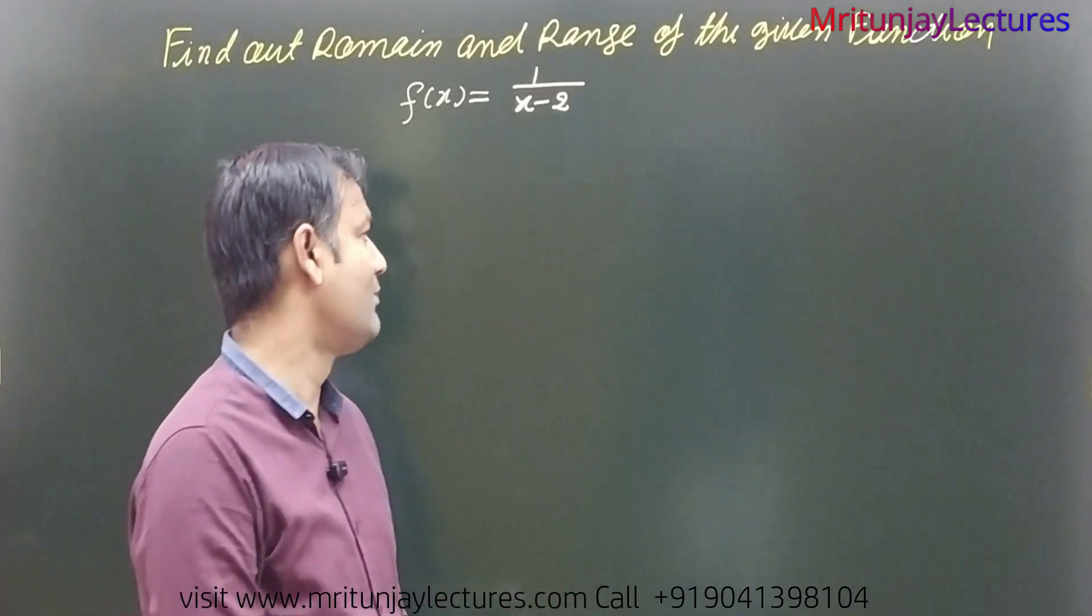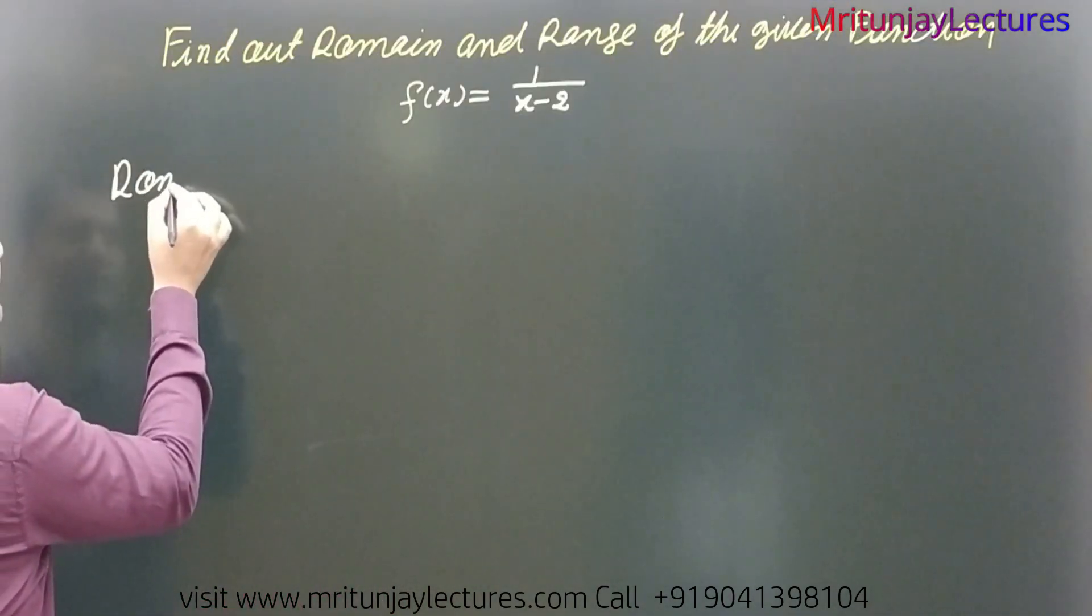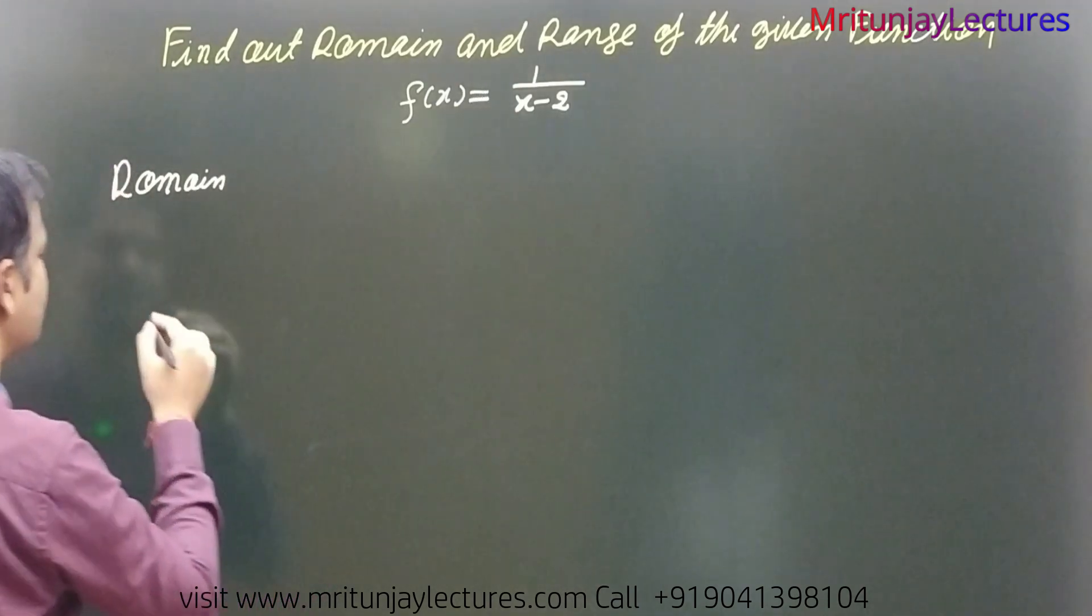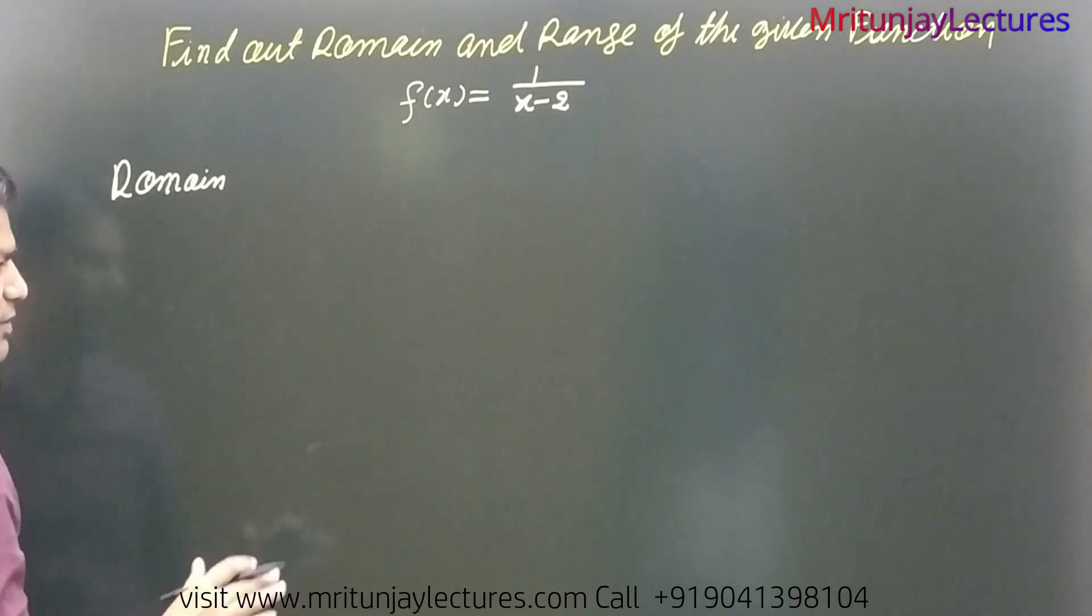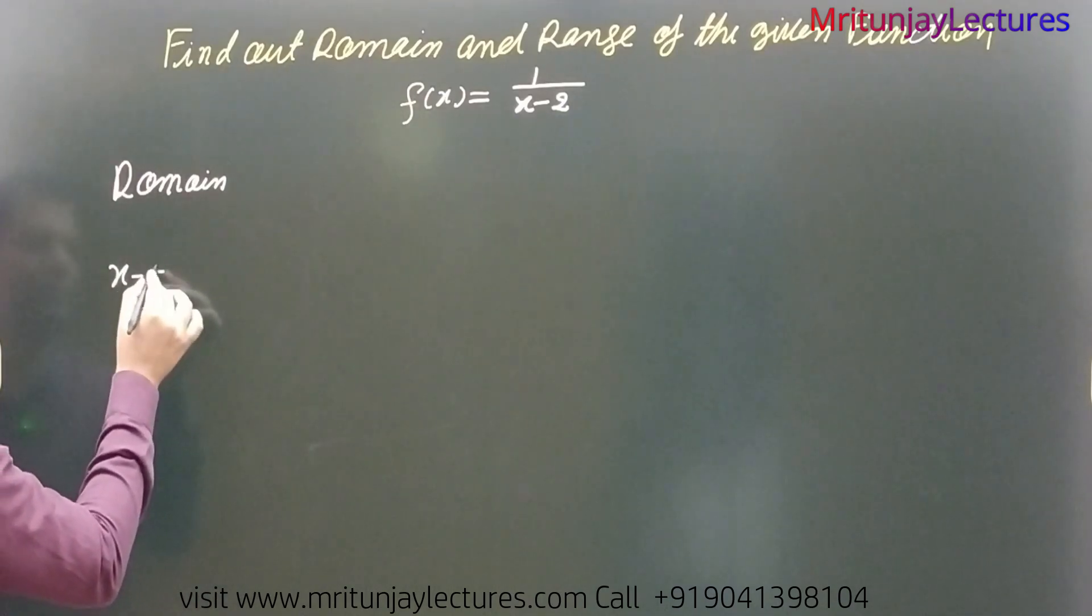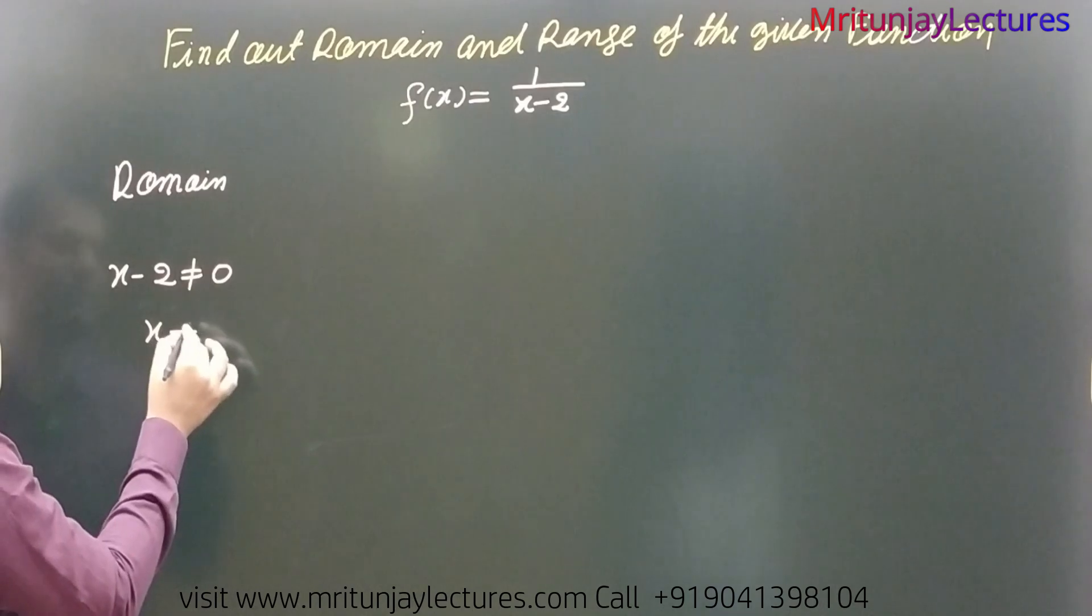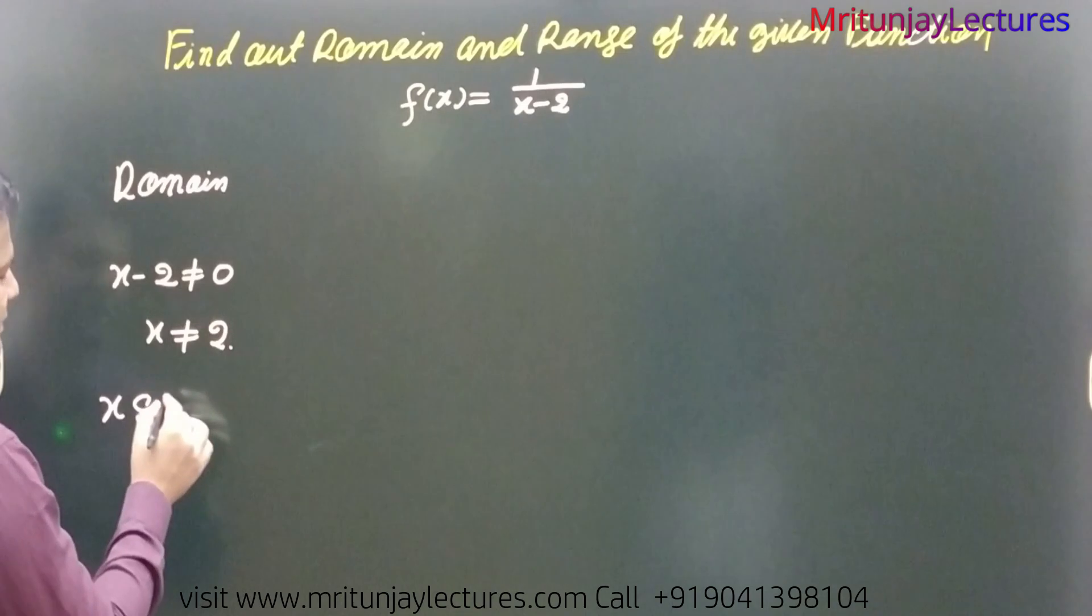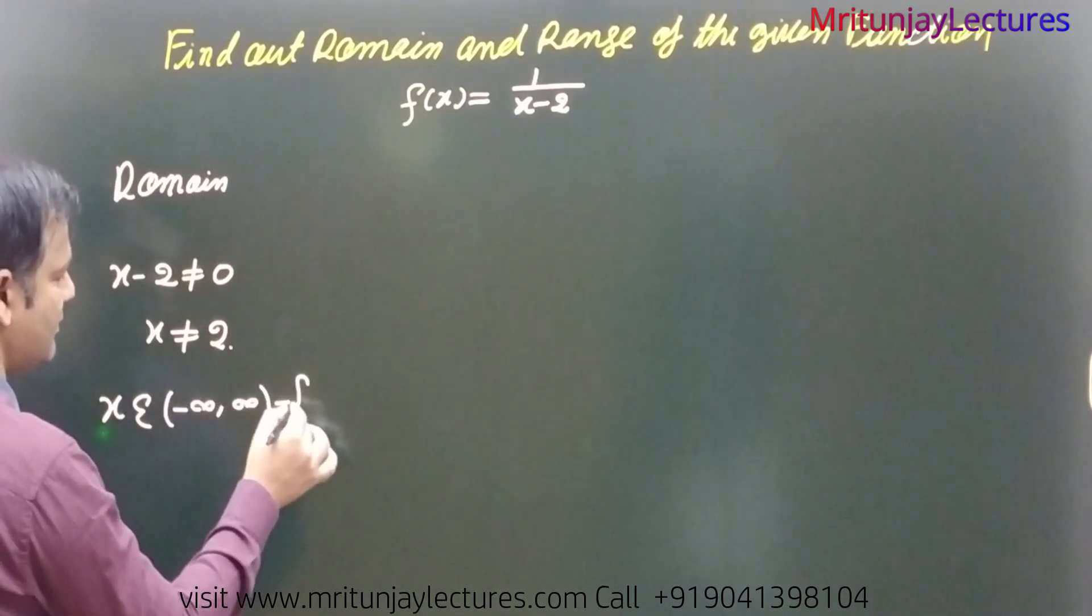So first of all we have to focus on domain. How can we determine domain? Domain means for which value of x, f of x is defined. Simply if x minus 2 is not equal to 0, means x is not equal to 2, means x is defined for all values except 2.